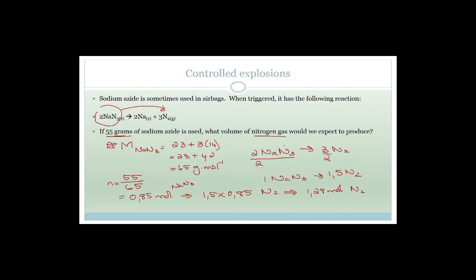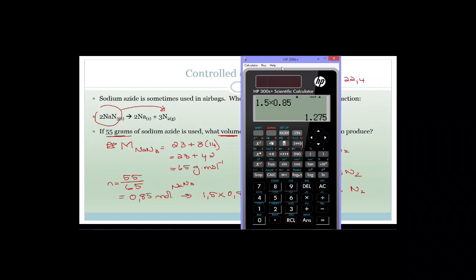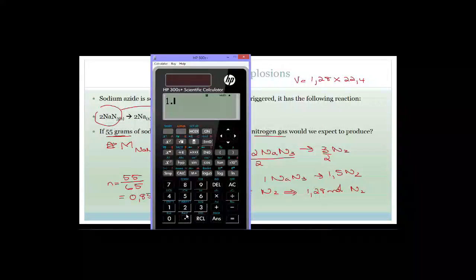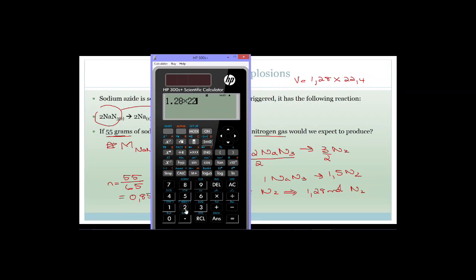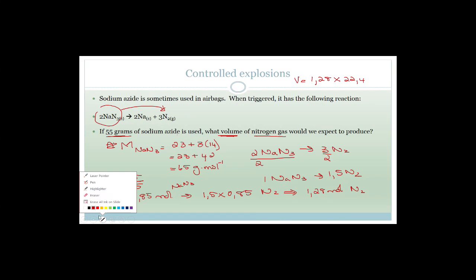Volume of N₂ = 1.28 × 22.4 = 28.67 dm³. That's as far as we're going today, grade 11s. Please join me again on Thursday and we'll carry on with our science. Have a great day.